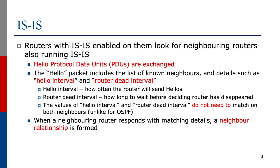Routers with IS-IS enabled on them look for neighboring routers also running IS-IS. Hello protocol data units, or PDUs, are exchanged. The hello packet includes the list of known neighbors and details such as the hello interval and the router dead interval. The hello interval is how often the router will send hellos. Hello intervals are usually on the order of a few seconds: 5, 10, or 15, depending on vendor defaults.